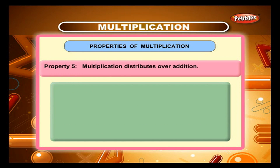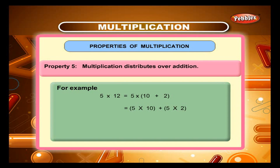Property 5: Multiplication distributes over addition. Let us see an example. Multiply 5 into 12. To make this multiplication easier, the bigger number can be split into 2 numbers, that is 5 into (10 plus 2). Now multiply 5 separately by the 2 numbers, that is 5 into 10 and 5 into 2. We get the products 50 and 10. Add both numbers to get the final product, which is equal to 60.